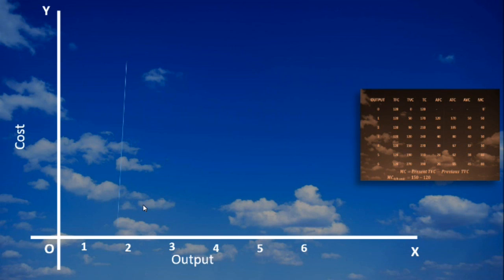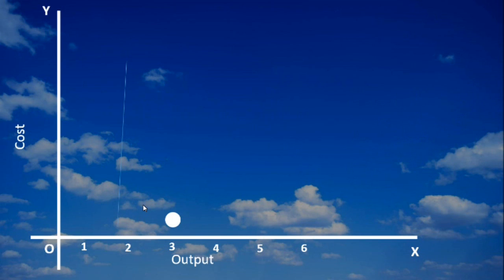From the clipping, we understand MC reaches the minimum first at three units of output. It is less than that of the minimum value of Average Variable Cost and Average Total Cost. Fix it as point M.